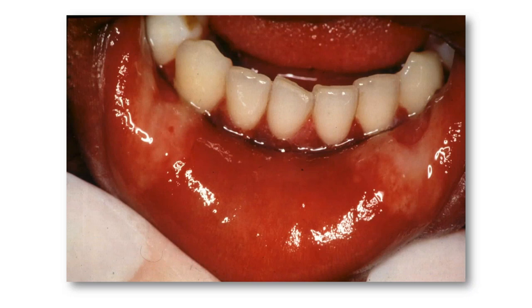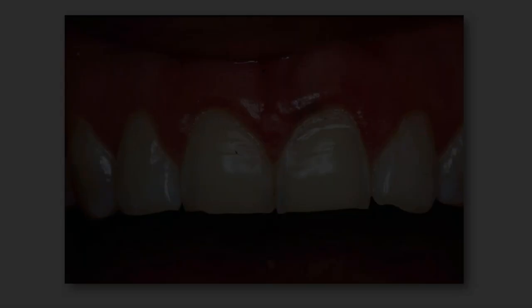He also had target lesions — with erythema multiforme you get concentric circles on the skin, said to look like a dartboard. These appear on the palms of the hands and are present in a number of but not all cases.